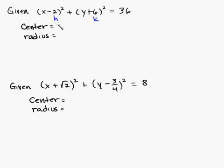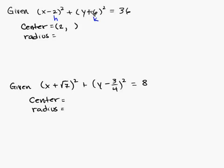The center is going to be the point h, k. However, if you were given the center and plugged it into the equation where you have x minus something and y minus something, if you've got a positive, that means you must have had a negative number. So basically, all you've got to do is switch the sign of h. So in this case, it's going to be positive 2, and this right here is positive 6, so just make it negative 6.